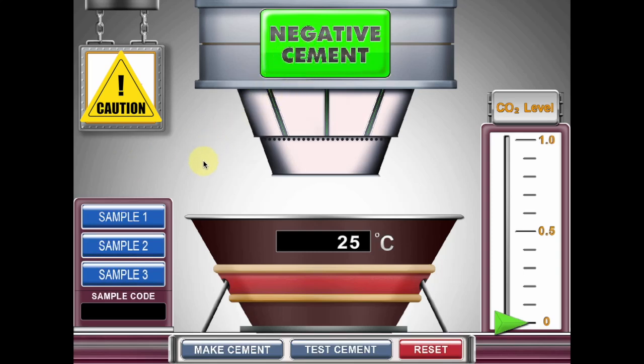Welcome to the Negative Cement simulation. Within this simulation, you will create different types of cement and monitor how much carbon dioxide is emitted during the production of each type. You will also observe how much carbon dioxide is absorbed from the atmosphere by the cement during the curing process.